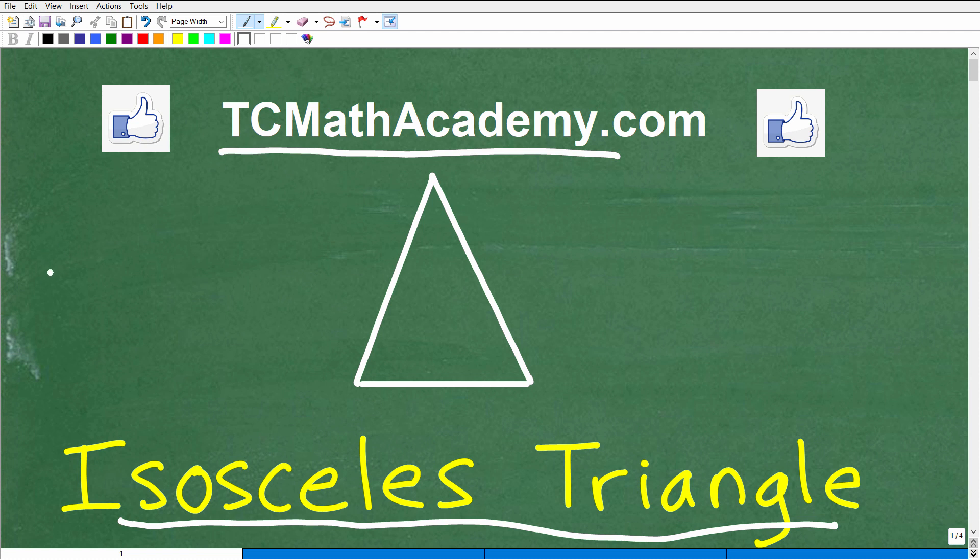Let me quickly name out a few that you need to know: obtuse, acute, scalene, equilateral, isosceles, and right. And I'm trying to think, am I missing anything? I don't think I am, but we're going to just focus in on isosceles. This is not that difficult.